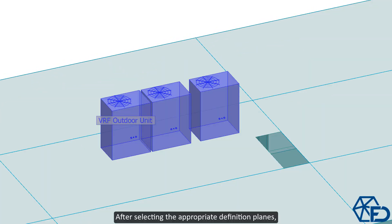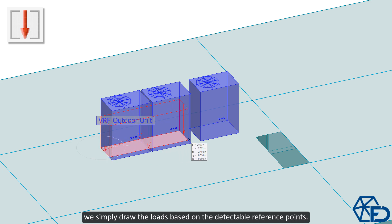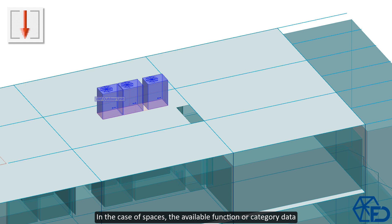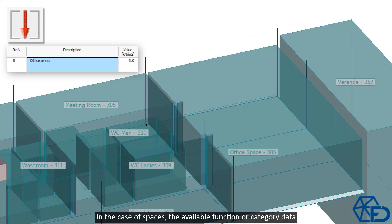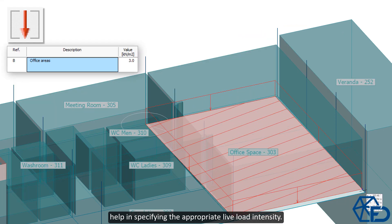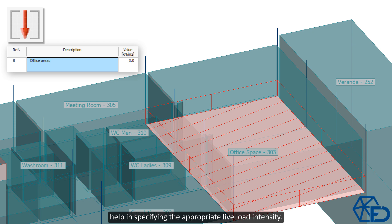After selecting the appropriate definition planes, we simply draw the loads based on the detectable reference points. In the case of spaces, the available function or category data help in specifying the appropriate live load intensity.